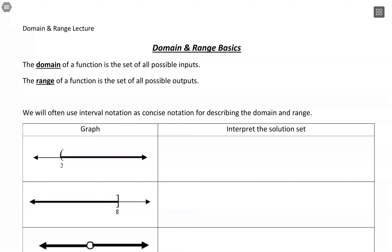Domain and range can help us describe what's allowed as inputs and outputs for our function. Domain specifically lists the possible input values, or the possible x values — things that we are allowed to plug in. For the range, we're stating our possible outputs: the possible y values that we can see for our function.